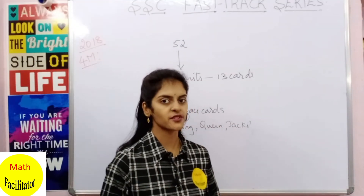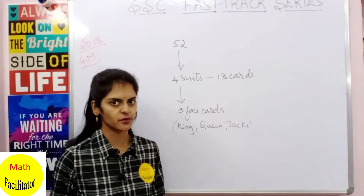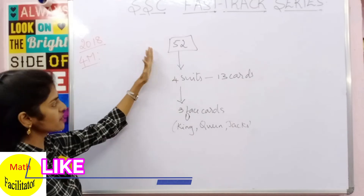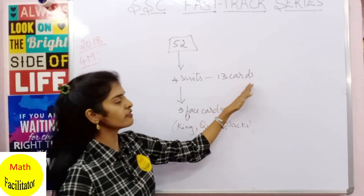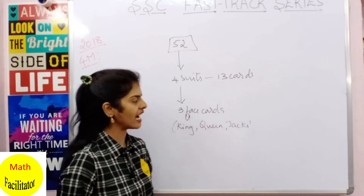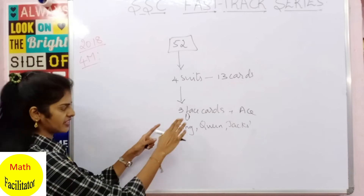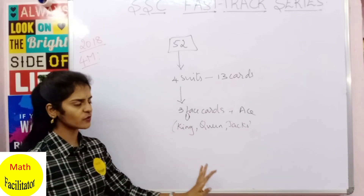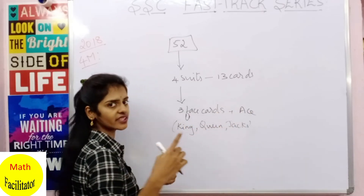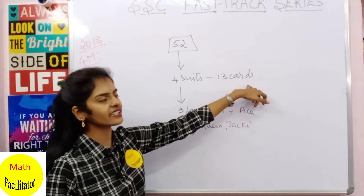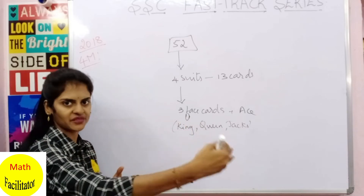Before the next problem, let me explain the concept of a deck of cards. A deck has 52 cards divided into four suits, and each suit consists of 13 cards. Out of those 13, there are three face cards — king, queen, and jack — plus one ace, and then the number cards 2 through 10, making 13 cards per suit.